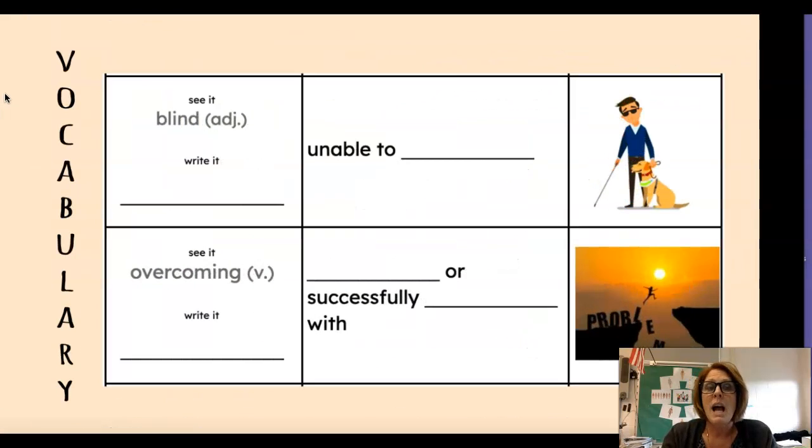Next we have blind. This is also an adjective. Say it with me. Blind. Write it on the line and that means unable to see.